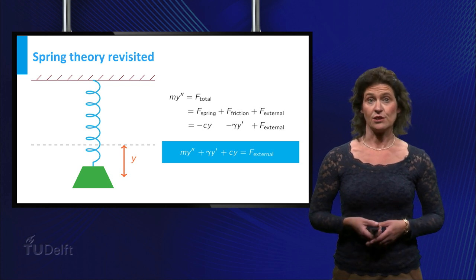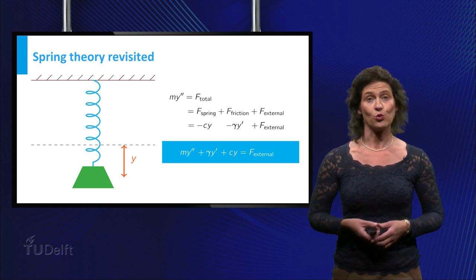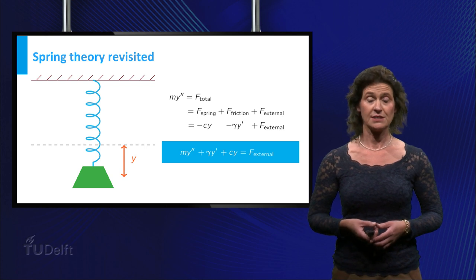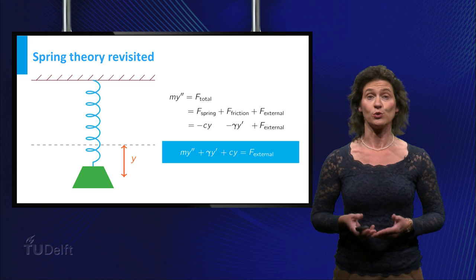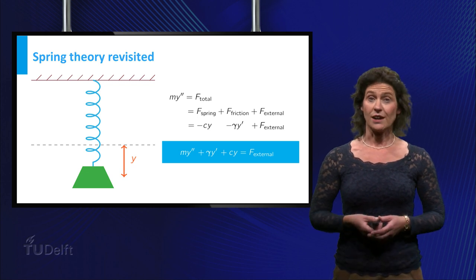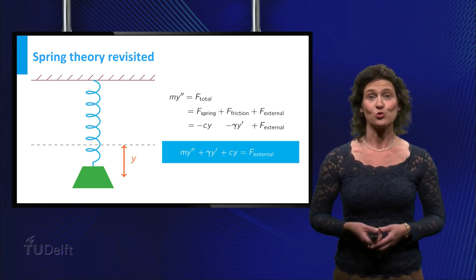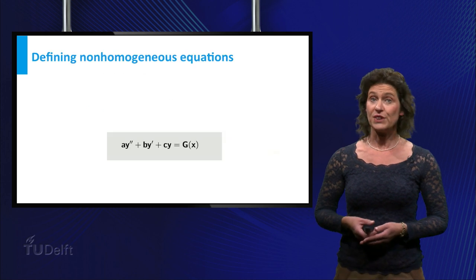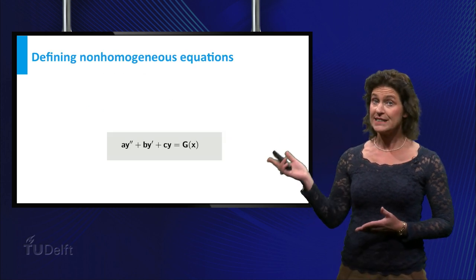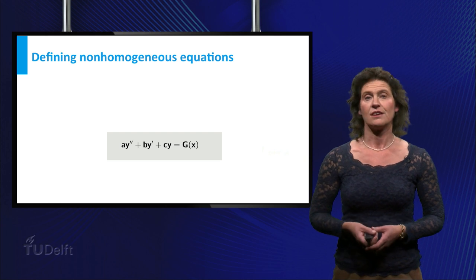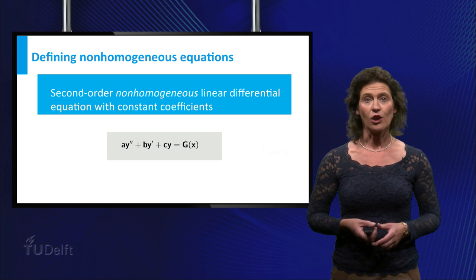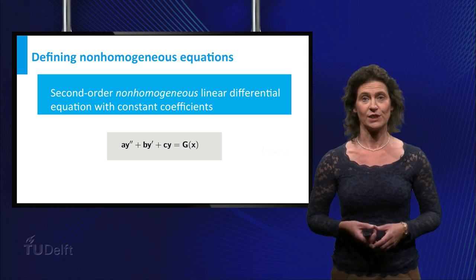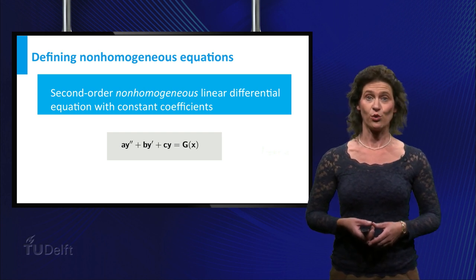Since the previous lecture, you know how to solve second-order homogeneous equations, that is those equations with a right-hand side equal to zero. You are now about to extend this knowledge to equations of this form, where g is some function of x. Such an equation is called a second-order non-homogeneous linear differential equation with constant coefficients.